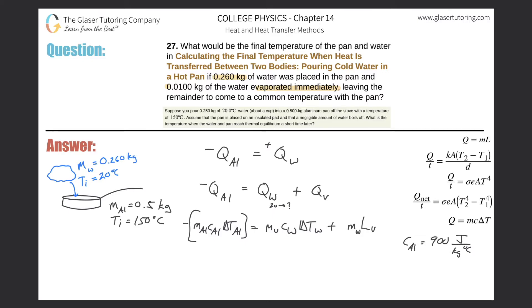Let's calculate. The mass of the aluminum they told us is 0.5 kilograms. So negative 0.5, specific heat of aluminum is 900, the change in temperature of the aluminum - the final temperature is something I don't know, that's what I'm looking for, but the initial started at 150. So I set it up like that - it's always final minus the initial.